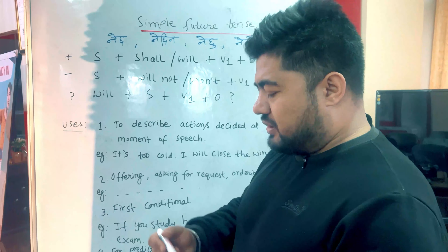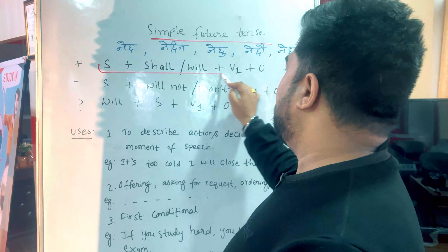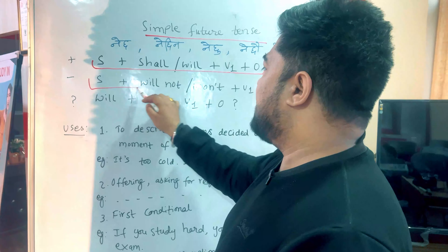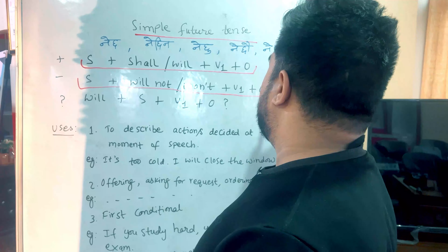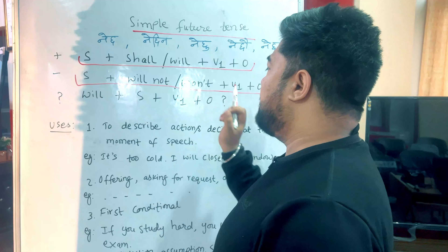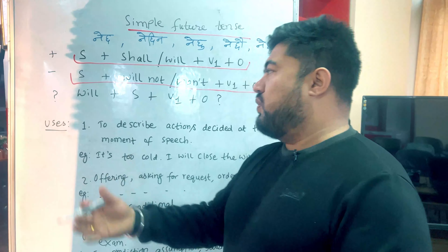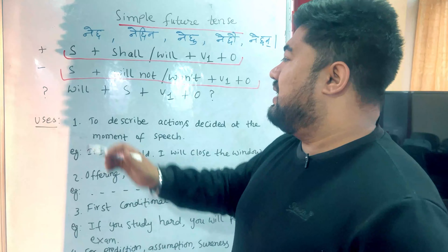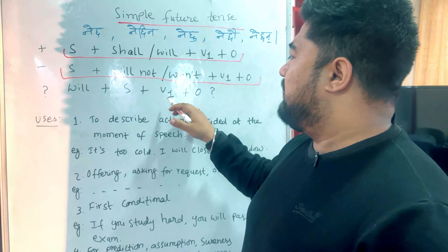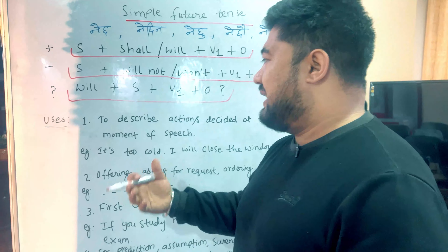For a positive sentence: subject plus will plus base verb (V1) plus object. For negative: subject plus will not (won't) plus V1 plus object. For example: they won't go home, she won't go home, she won't study. For questions, move will before the subject.